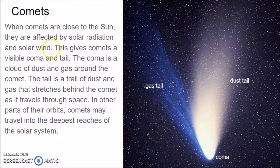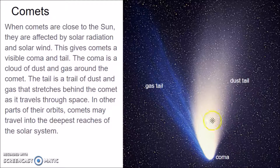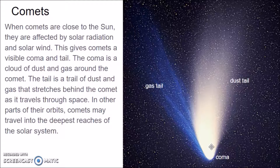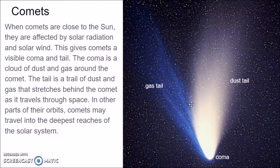When comets are close to the Sun, they're affected by solar radiation — the heat from the Sun and the solar wind, which is particles that come off the Sun. This gives comets a visible coma and tail. The icy, dusty solid part of the comet is right down in the coma. The coma is the cloud of gas and dust around the comet. When it gets close to the Sun, it heats up, starts kind of boiling and steaming, releasing gas and dust, and forms a tail that stretches out behind it. If it's big enough, you can go outside and see this in the sky.